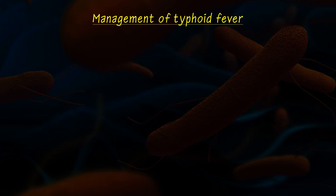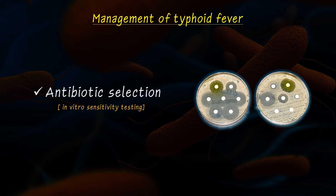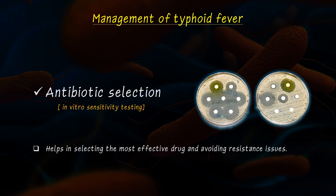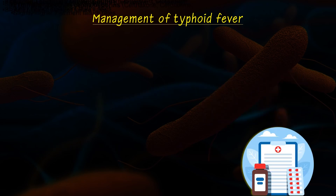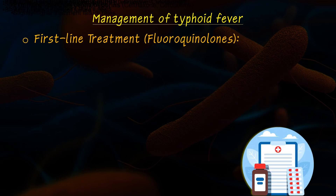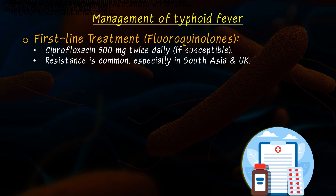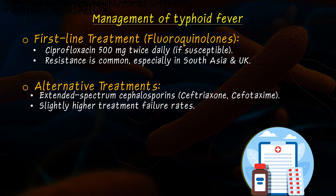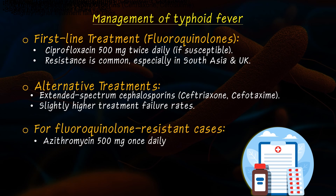Next, the management of typhoid fever. Antibiotics are decided based on in vitro sensitivity testing to check which antibiotics are effective against the specific bacteria causing the infection. This testing helps in selecting the most effective drug and avoiding resistance issues. Fluoroquinolones are the first line of treatment — ciprofloxacin 500 mg is given twice daily. As alternatives, extended-spectrum cephalosporins like Ceftriaxone and Cefotaxime are also prescribed, but they have slightly higher treatment failure rates. For fluoroquinolone-resistant cases, azithromycin 500 mg once daily is given.